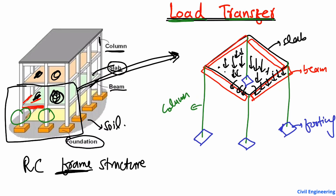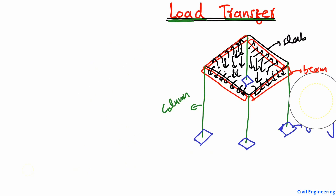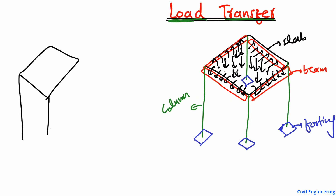The slab load is transferred into the beams because the reinforcement is provided from the slab into the beams — there is a connection of reinforcement from slab into beams. That's why when the load comes, it transfers from the slab section into the beam section. For example, in this frame structure here, when load acts on the slab, it transfers to the beams on the four edges.